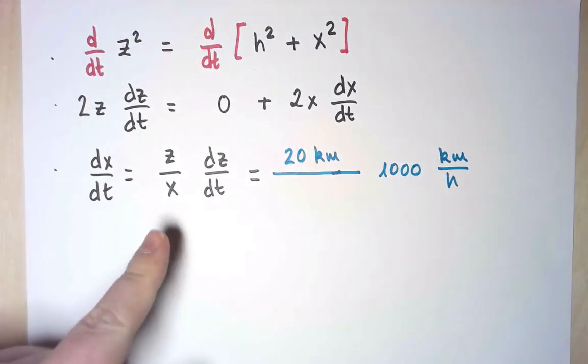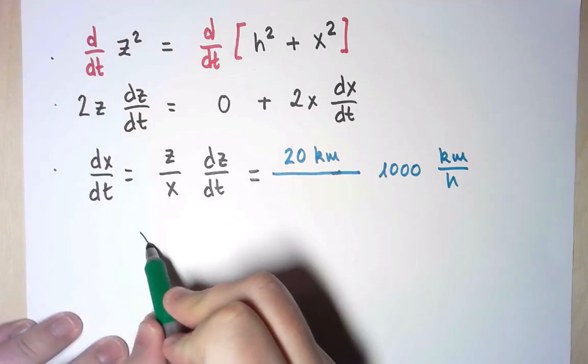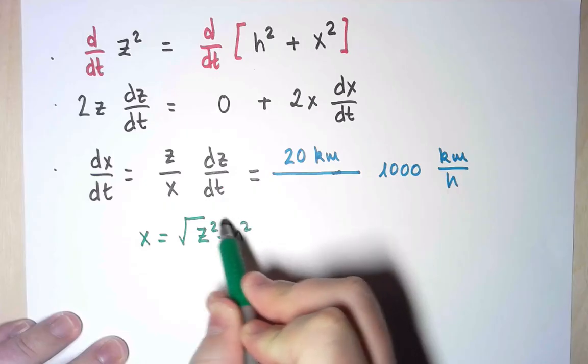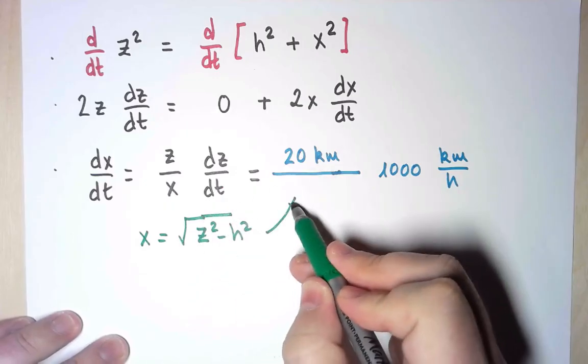I also need the value of x. And luckily, I can solve for x in the original equation. I know that x is the square root of z squared minus h squared, and I'm going to just plug that in there.